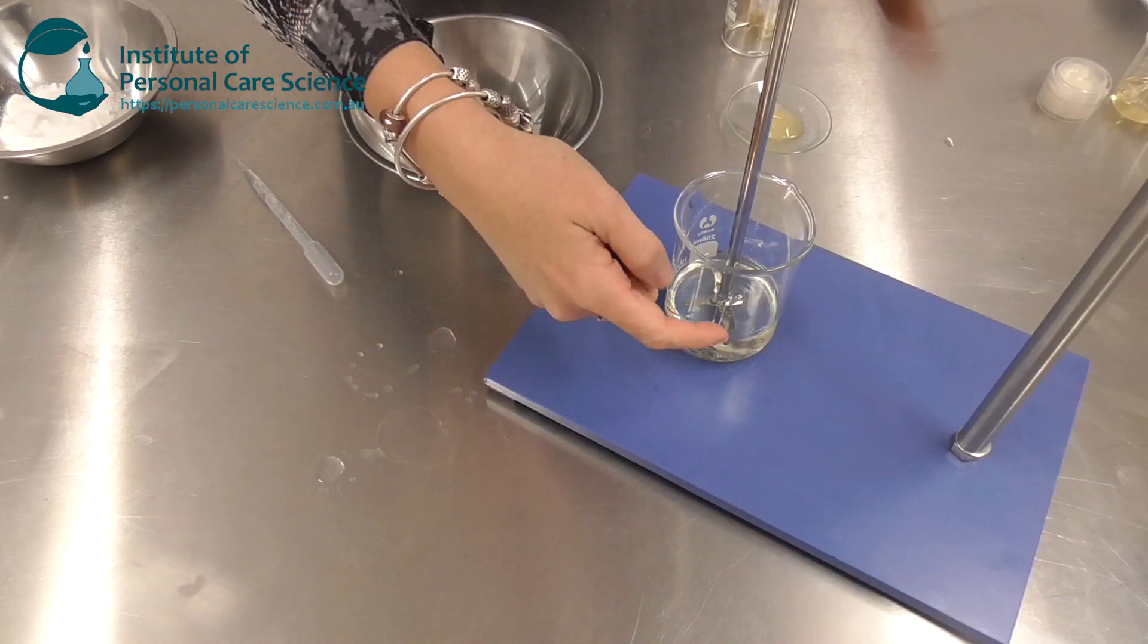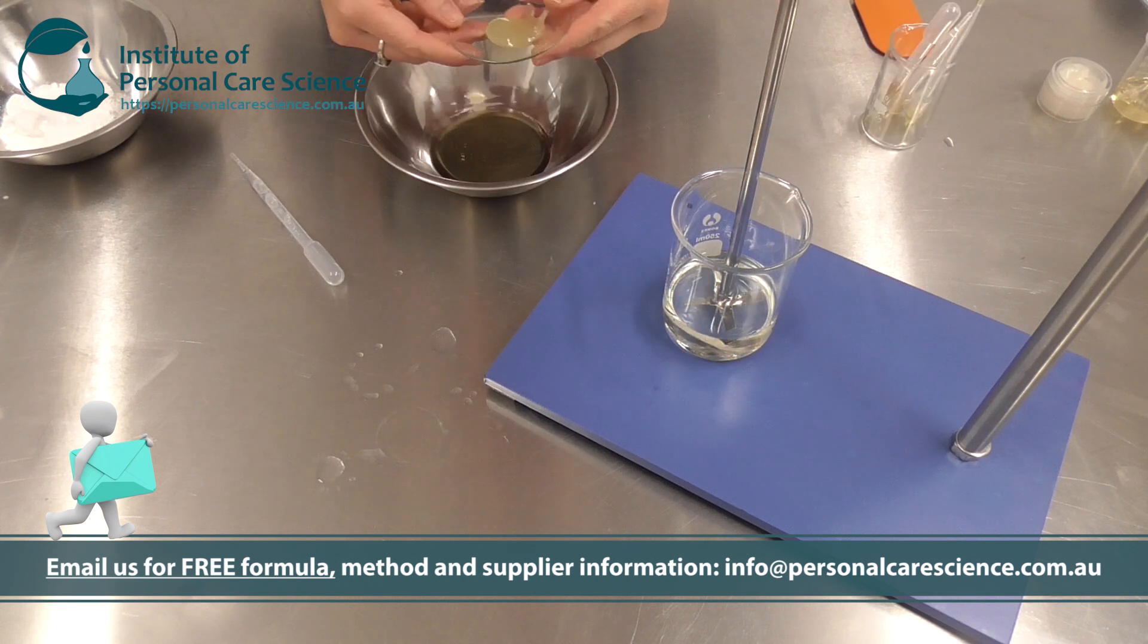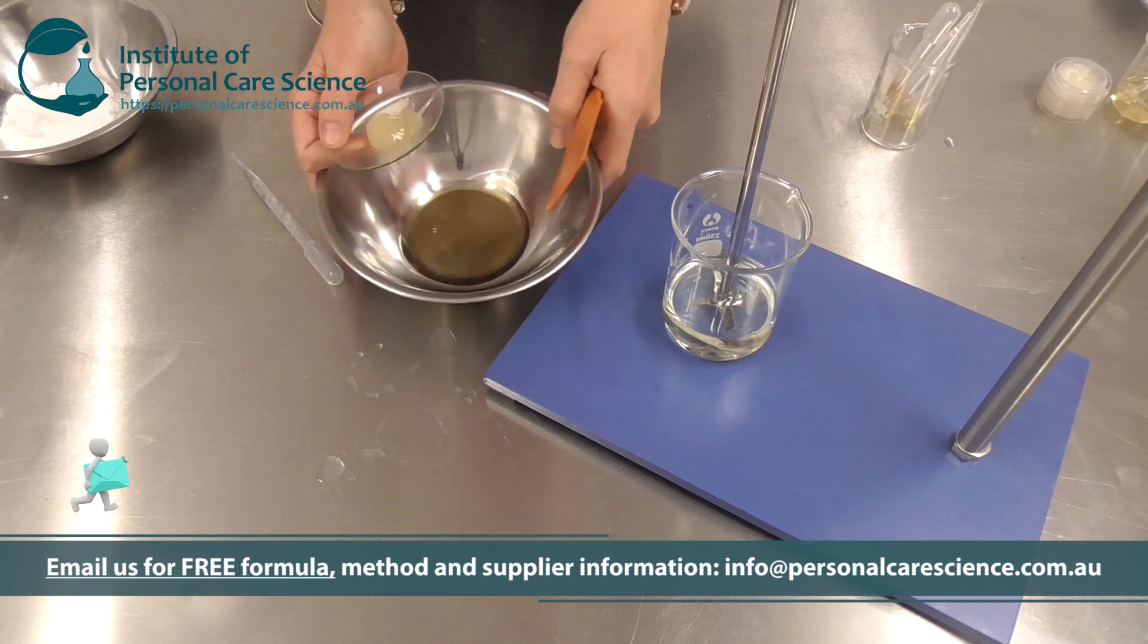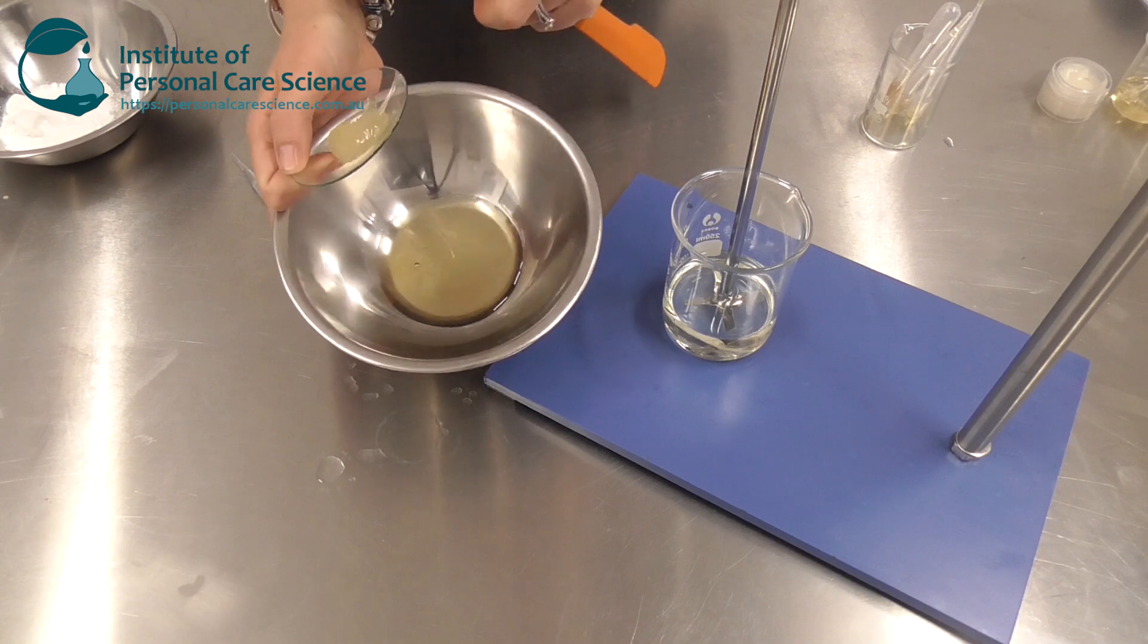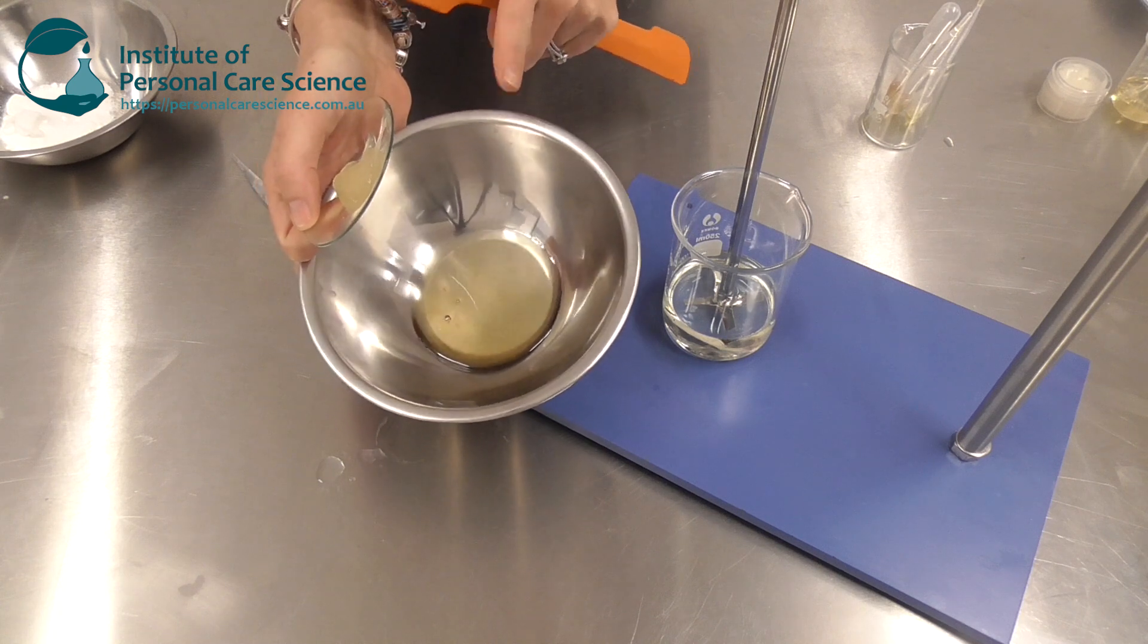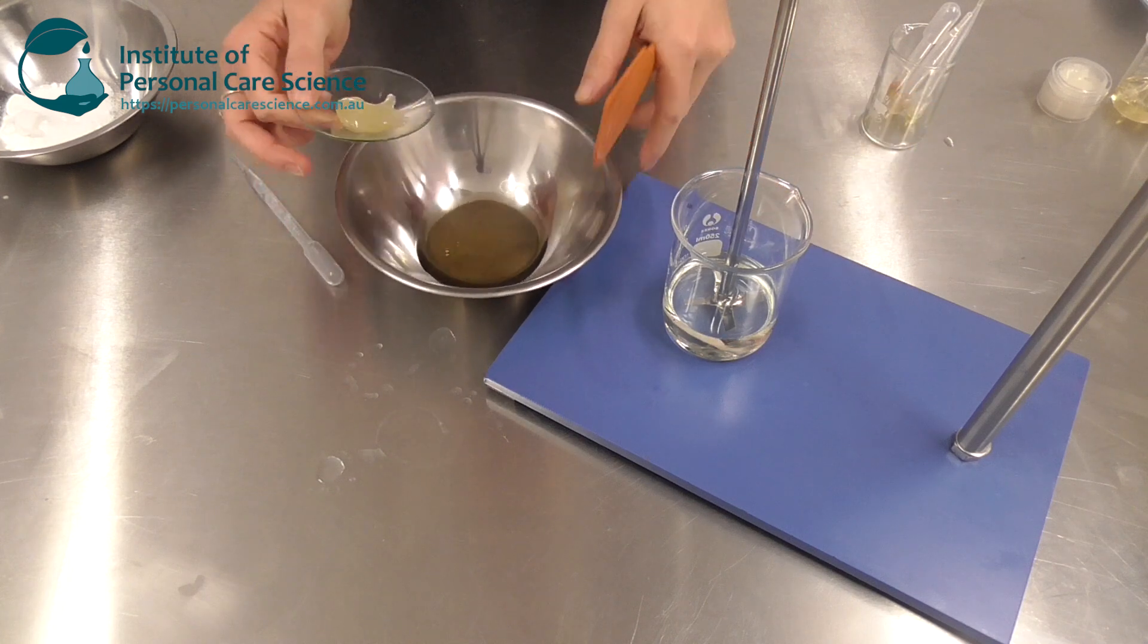Now in this beaker I have my plant oils and my caprylic capric triglycerides. This particular product feels incredibly soft and beautiful on the skin. Now in this bowl I have a low HLB emulsifier, I'm using Arlacel 1689, and that's because this is a predominantly oil formula.